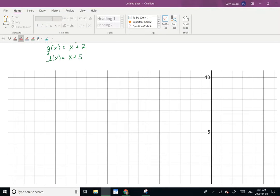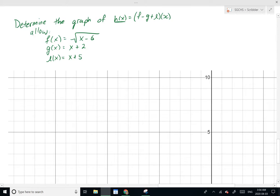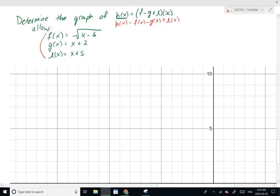So let's see how that might look. So we're told that h(x) equals the function f minus g plus l. Okay, so we have lots of operations going on here. I'm going to rewrite this as f(x) minus g(x) plus l(x). And we're told over here what those equations equal. So what I'm going to do is I'm going to substitute our function notations in for the actual equations that they are.